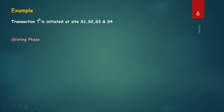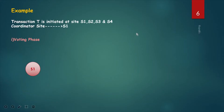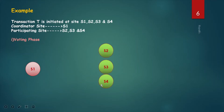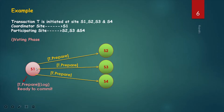Take one example. There is one transaction T initiated at sites S1, S2, S3, and S4. Here, the coordinator site is S1, and the remaining sites S2, S3, and S4 are participating sites. First phase is the voting phase. The coordinator site writes T-prepare in its own log. The T-prepare message is sent to all participating sites, indicating that S1 — the coordinator site — is now ready to commit.